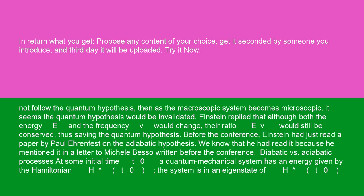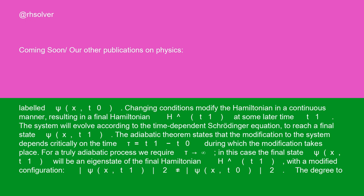Diabatic versus adiabatic processes: at some initial time T0, a quantum mechanical system has an energy given by the Hamiltonian H-hat(T0). The system is in an eigenstate of H-hat(T0), labeled psi(x, T0). Changing conditions modify the Hamiltonian in a continuous manner, resulting in a final Hamiltonian H-hat(T1) at some later time T1. The system will evolve according to the time-dependent Schrödinger equation to reach a final state psi(x, T1).